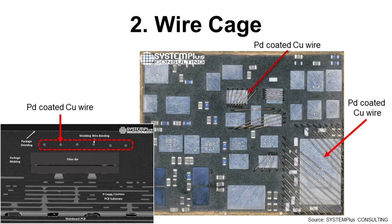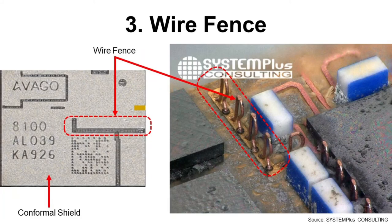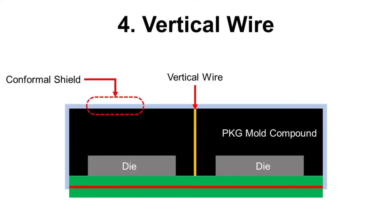The second method is wire cage. For this method, wires go over and cover the die using the wire bonding process, and it looks like a bird cage. The third method is wire fence — through the wire bonding process, we can make a fence for compartment shield. The last one is vertical wire, which also uses the bonding process but cuts the wire after pulling up. The process flow is vertical wire making, molding, vertical wire exposure, then conformal shield.